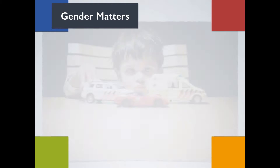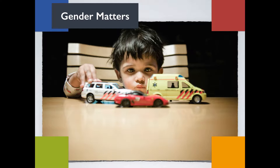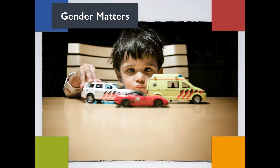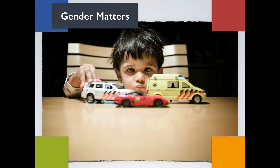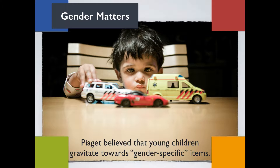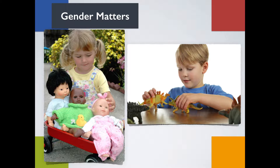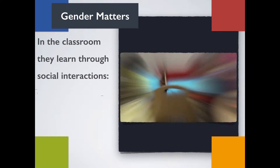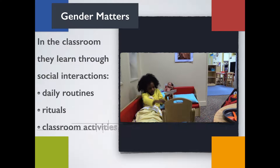We can also learn about gender roles and identities from philosopher Jean Piaget, most known for his theories of cognitive development in young children. He believed that during playtime, children begin to gravitate toward gender-specific items. Think about items in your classroom — dolls and dinosaurs may come to mind. Although both girls and boys may play with the same items, Piaget's theory suggests that many boys will choose dinosaurs and girls will choose dolls.